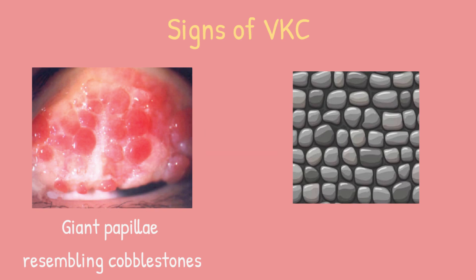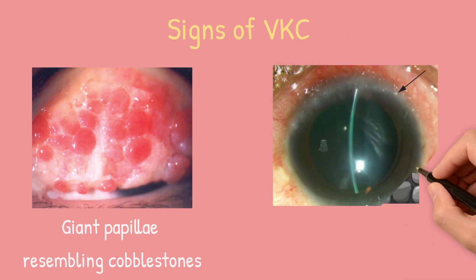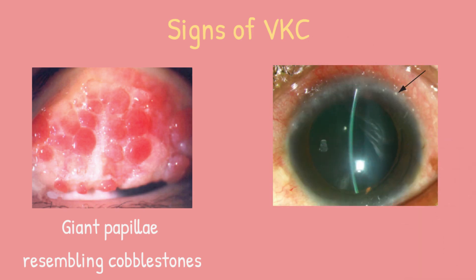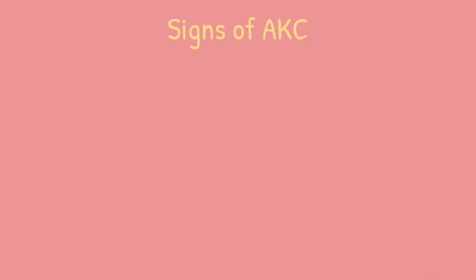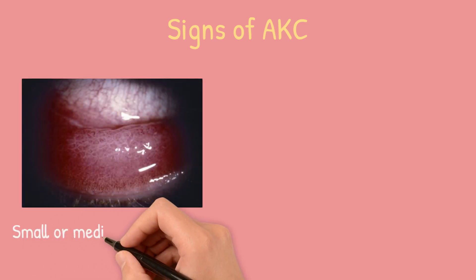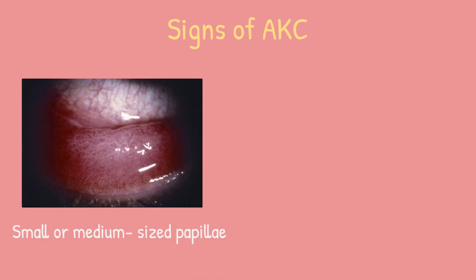The second form of vernal keratoconjunctivitis is limbal, which has a thickened, gelatinous appearance with opalescent spots as shown in this picture, called Horner-Trantas dots, which are aggregates of eosinophils and epithelial cells.